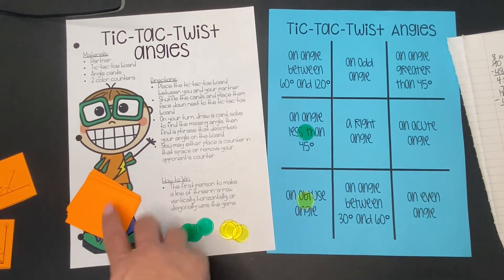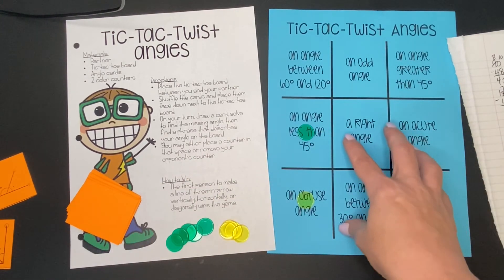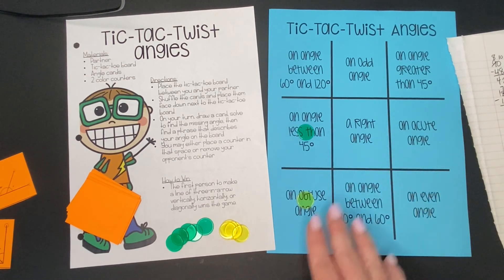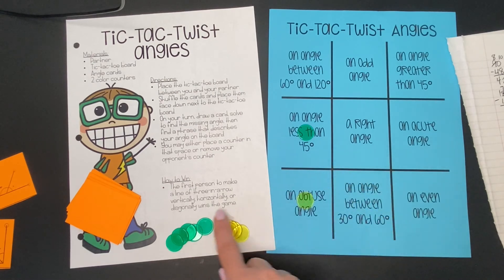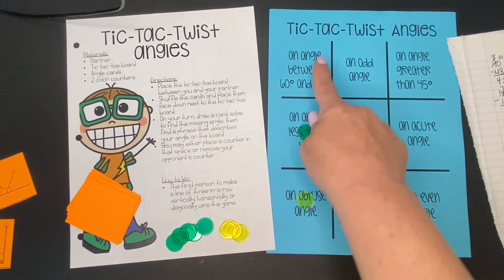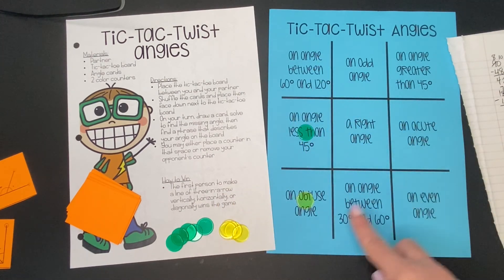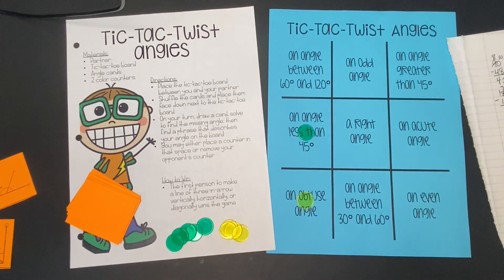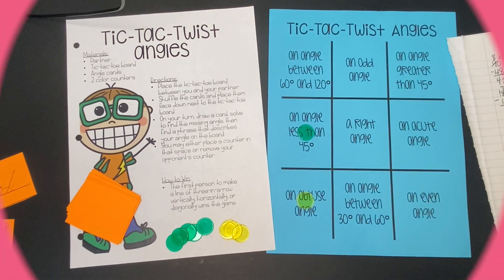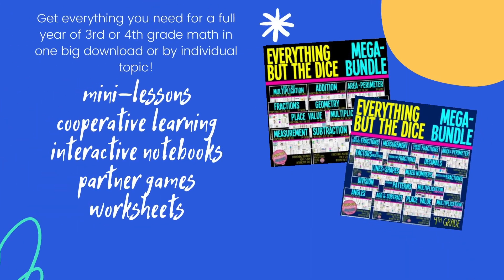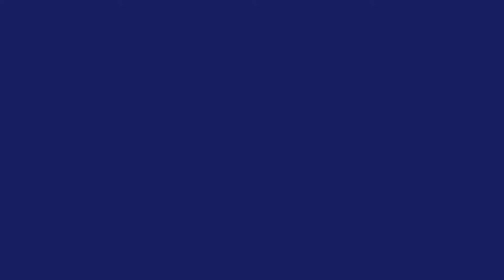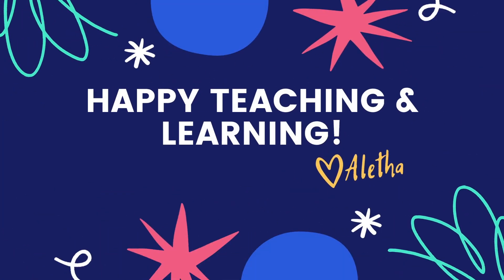You keep playing this way — drawing cards, solving for the missing angle, then finding a spot on the tic-tac-toe board or removing a counter from the board. The first person with three in a row — either up and down, across, or diagonally — is the winner of Tic-Tac Twist Angles. Enjoy playing. Thank you.